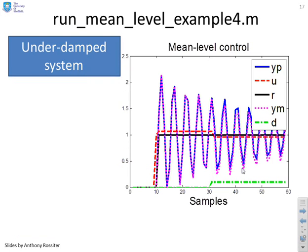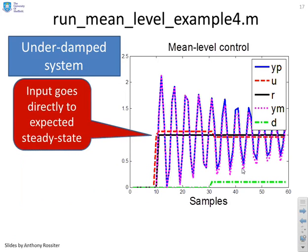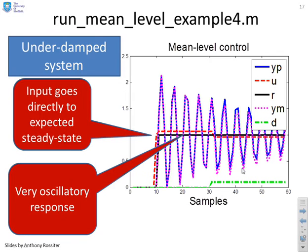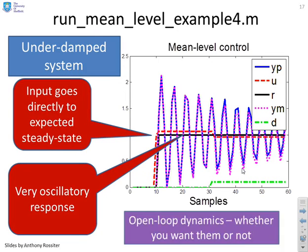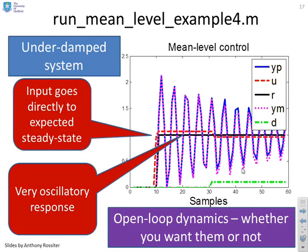Now, example four is a particular example of the problem here. This is a severely underdamped system. You can see we've rather gone over the top with the oscillation. But once again, the input has gone exactly to the expected steady-state value, which is what you want. But you've now got an extremely oscillatory response. And so there's the key message again. You have open-loop dynamics, whether you want them or not. So a mean level control law will work well if the open-loop dynamics are good. But if the open-loop dynamics are poor, it's probably not a good strategy.